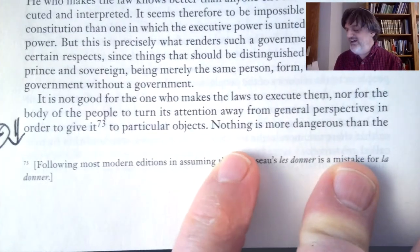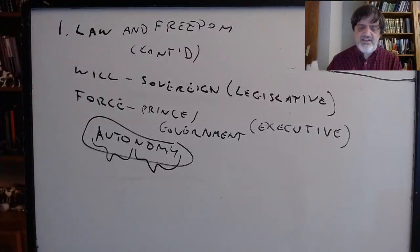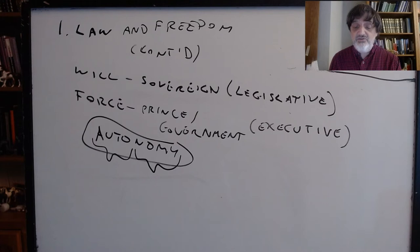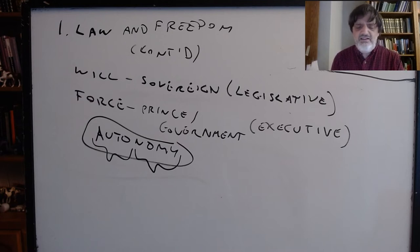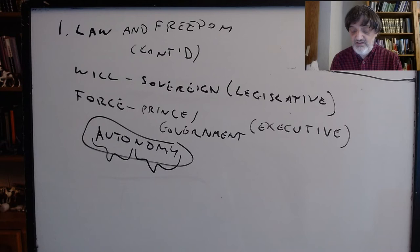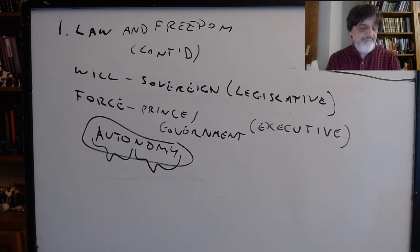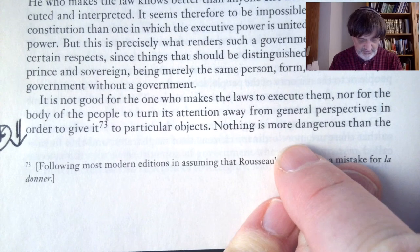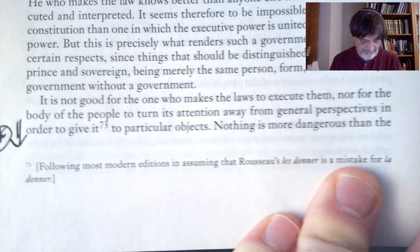When a law is proposed in the people's assembly, what is asked of them is not precisely whether they approve or reject the proposition, but whether or not it conforms to the general will that is theirs. Each person in giving their vote states their opinion on this matter, and the declaration of the general will is drawn from the counting of votes. So what question am I being asked when we vote as the sovereign? I'm not being asked 'do you like this law or not?' I'm being asked, speaking as a part of the general will, 'do you say this law is what the general will wants?' And if I'm in the minority, that just means I was wrong.